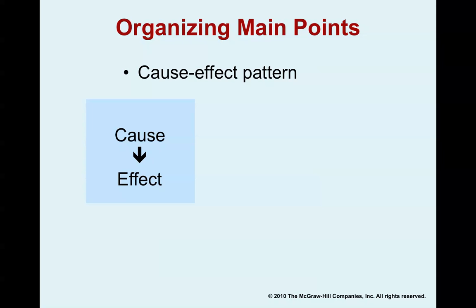Another way to organize your main points is the cause and effect pattern. If you're concerned about why something happened or is happening, a cause and effect relationship is a great way to organize. For example, some people refuse to ride in elevators because they have a strong fear of closed spaces — claustrophobia is the cause, and refusing to ride in an elevator is the effect. But don't be cemented into this format, because you can flip it around: there are millions of people who refuse to ride in elevators, and the cause is claustrophobia. Either direction is a totally valid way to organize your main points.